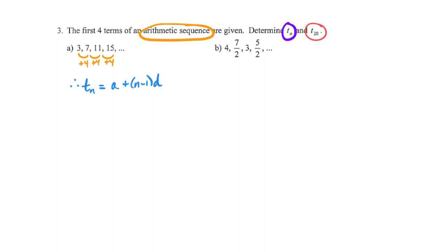You may start to look at that blue general term almost like a formula — it's often referred to as the formula for an arithmetic sequence. I would hope we just look at it as a relationship we built and understand. You can see within the sequence that your first term is 3, therefore A is 3. You found out we went by adding 4 from term to term, therefore D is 4. Just sub everything into your general term: term N equals 3 plus (N minus 1) times 4.